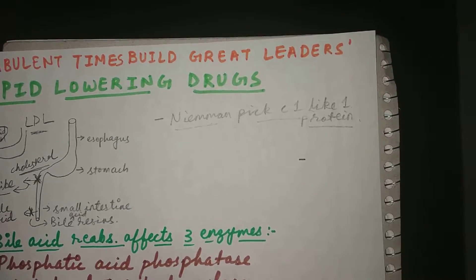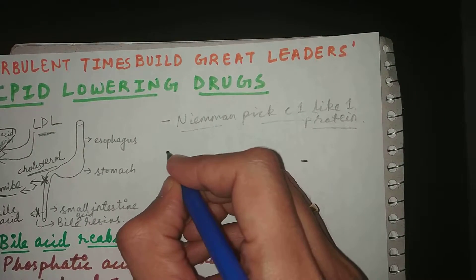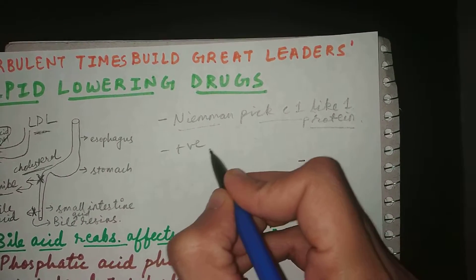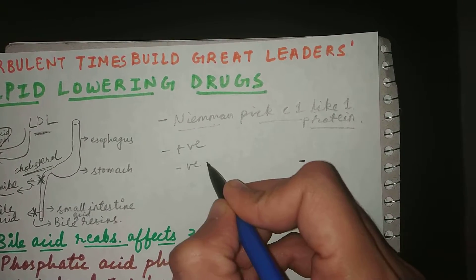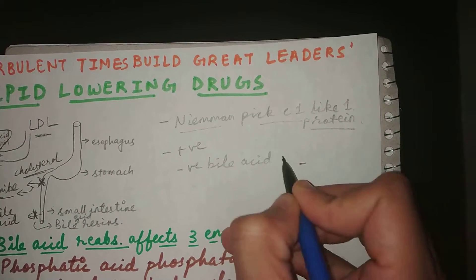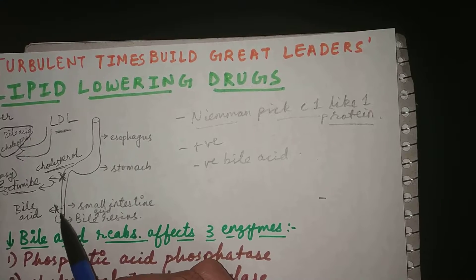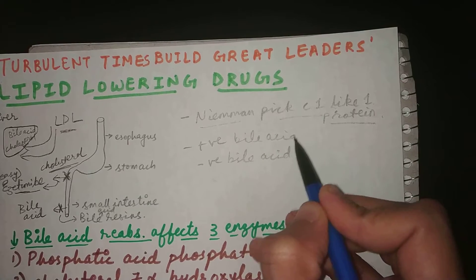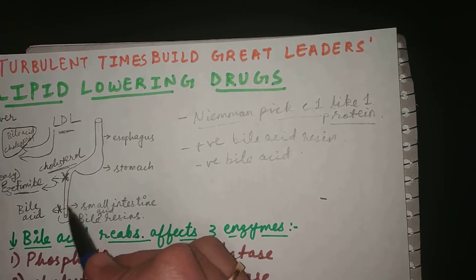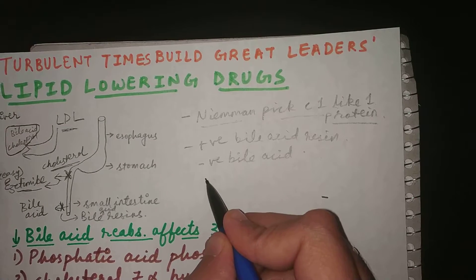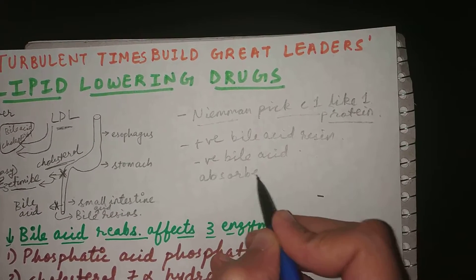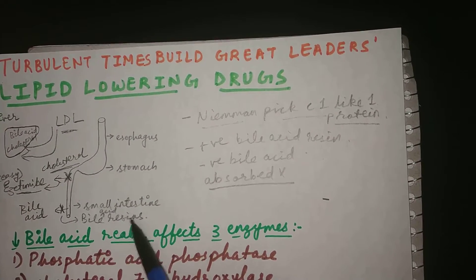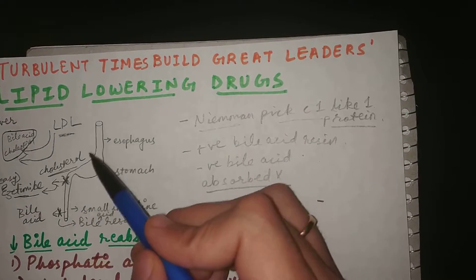Bile acid resins are positively charged, while bile acids are negatively charged. Bile acid resins are not absorbed in the small intestine, but they combine with bile acids in the small intestine and form a complex that cannot be absorbed. This complex is unabsorbable and is excreted in the feces. That is how bile acid resins work.